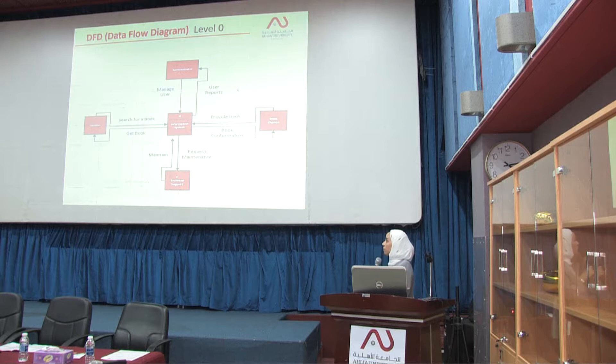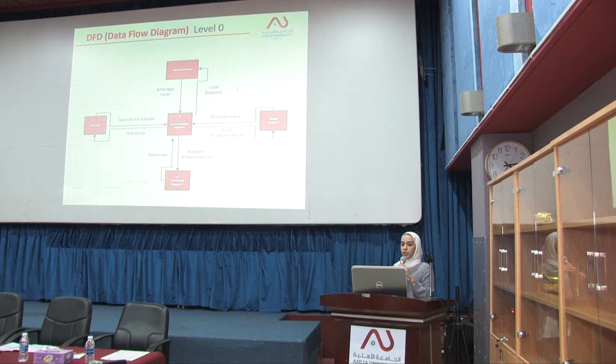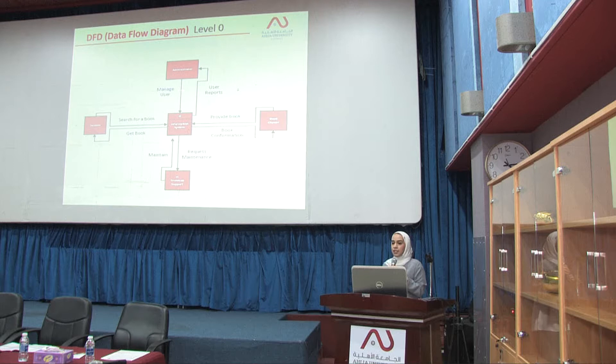Here we have the data flow diagram at level zero. Level zero of the DFD shows the external users and actors who use the book rental system and have a direct relation with it. It shows that we have four main users of the system: students, book owners, administrators, and IT technical support. Students have a specific process for searching and getting books. Book owners have a specific process for providing books. Administrators manage users and get user profiles, while IT technical support maintains the system.